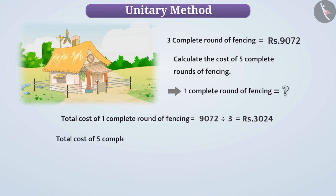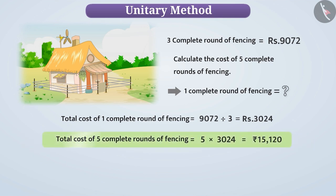Thus, the total cost of five complete rounds of fence is equal to 5 into 3024, which is equal to Rs. 15,120. Here, using Unitary Method, we get the total cost of five complete rounds of fence.